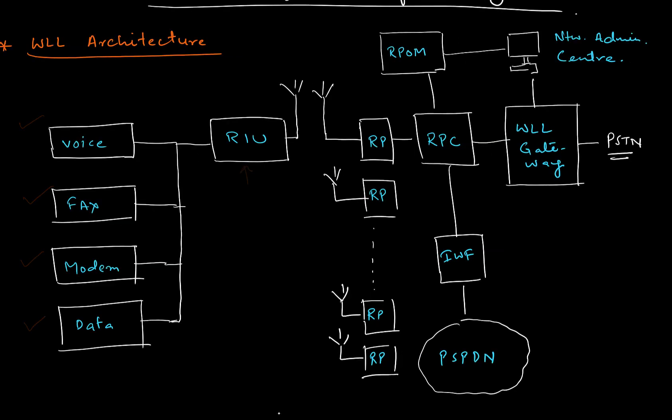This is the architecture for the WLL system. On the left side, you can see the user requirements: the user needs voice services, fax and email services, a modem to transmit data, and data services. These are the services required by a user who is using the WLL.